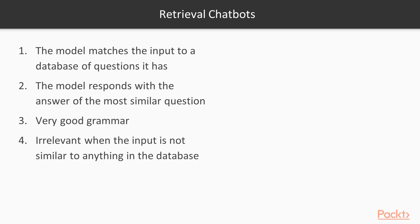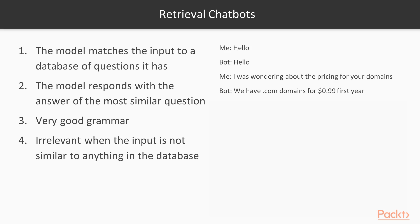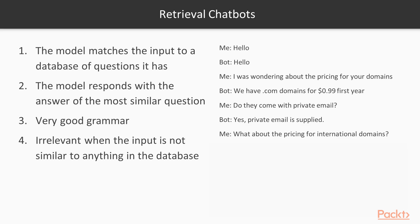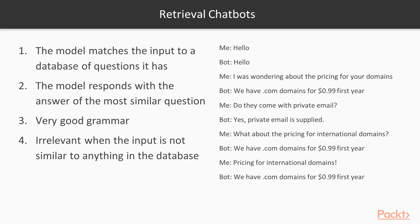Let's take a look at a conversation between me and the retrieval chatbot that I have built. Hello. I was wondering about the pricing for your domains. We have .com domains for $0.99 first year. Do they come with private email? Yes, private email is supplied. What about the pricing for international domains? We have .com domains for $0.99 first year. As you can see, it is very redundant when it doesn't know the answer for the question.